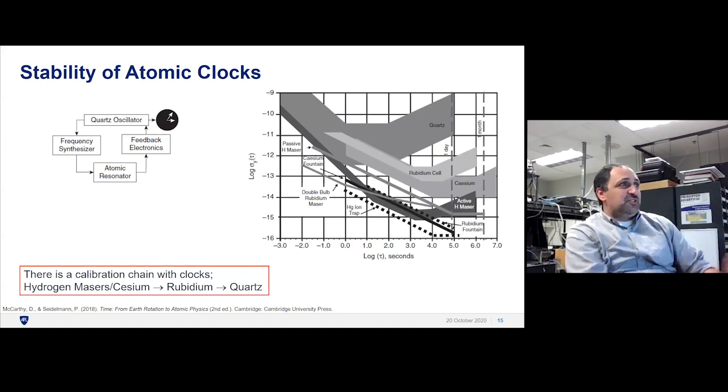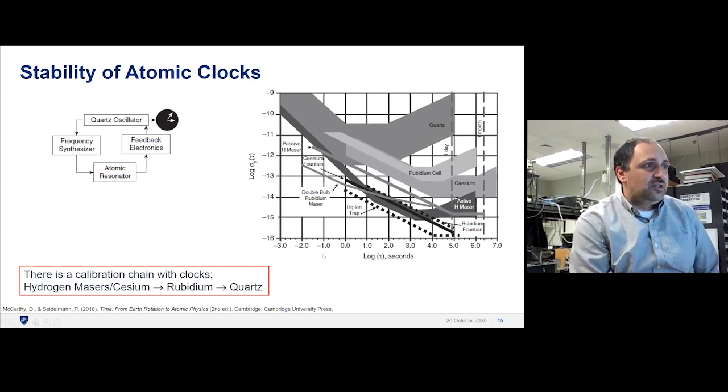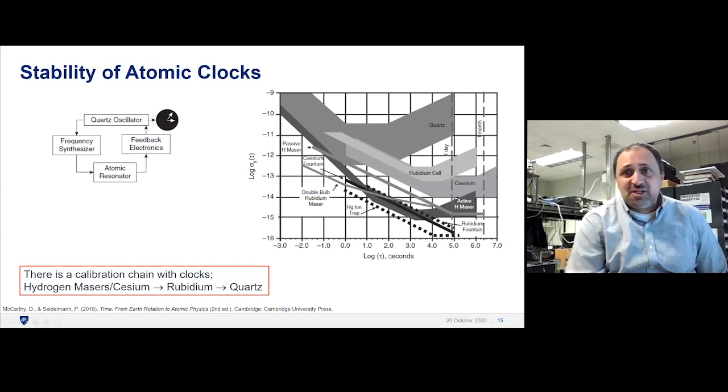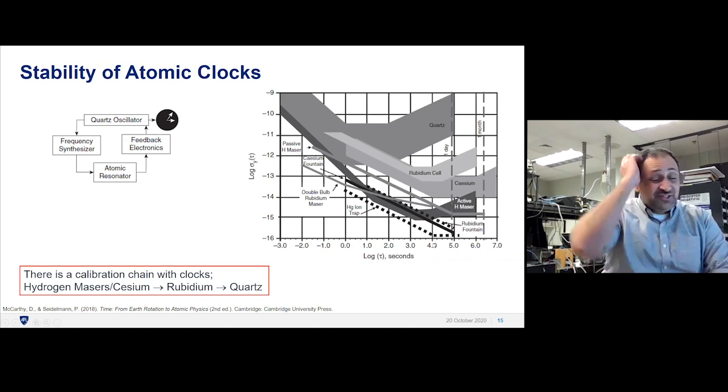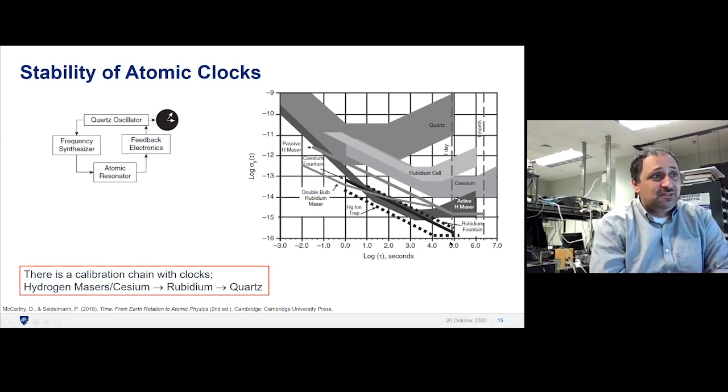This is the plot we've been building up to—the Allen deviation with time. It's logarithmic on both axes. You see up here quartz, which has stability best at about a second or 10 seconds. Rubidium, 10 to the 4th seconds, about an hour. At about a day, you see cesium. Then we have the active and passive maser. The passive maser is much better with long-term stability between a day and a month. Cesium between a day and a month.